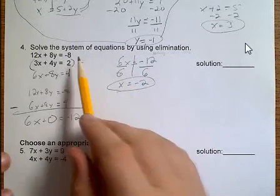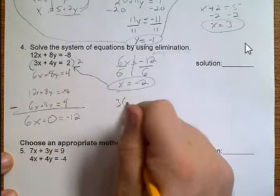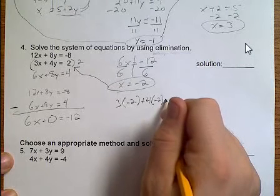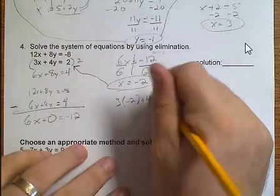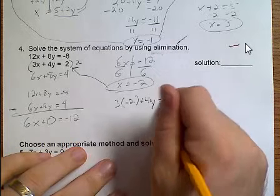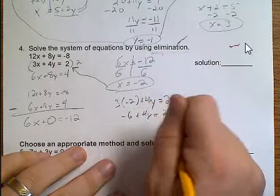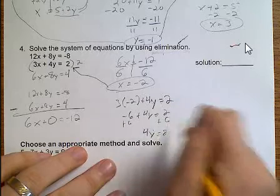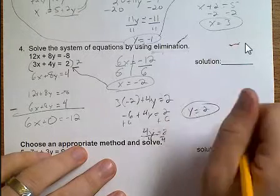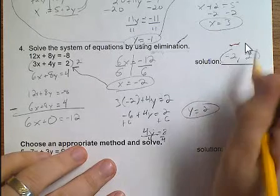Now I can plug this into either equation. I'm going to go with the one that has these smaller numbers. And so, 3 times negative 2 plus 4y equals 2. Now we solve, negative 6 plus 4y equals 2. Add 6, 4y equals 8. Divide by 4 and y equals 2. So now we have our points. Negative 2, 2. And we have our answer.